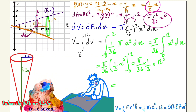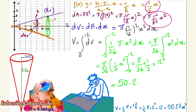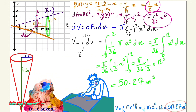So the result is 50.27 cubic meters. We see that going straight forward with direct integration gives the same answer as applying the derived formula — confirming our result.